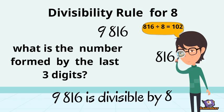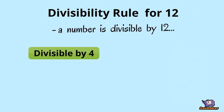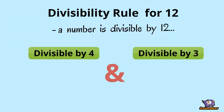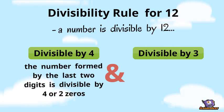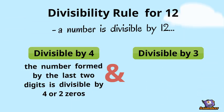Let's move on to the divisibility rule for 12. A number is divisible by 12 if it is divisible by both 4 and 3. The number formed by the last two digits must be divisible by 4, or the last two digits are both 0. The sum of the digits must be divisible by 3.